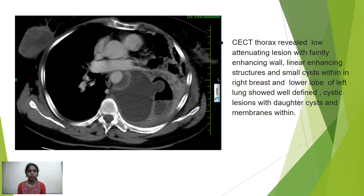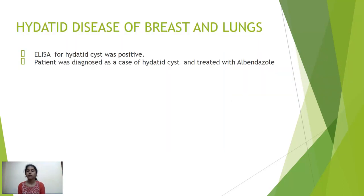CT thorax revealed a low-attenuating lesion with a faintly enhancing wall, linear enhancing structures, and small cysts within the right breast. The lower lobe of the left lung also showed a well-defined cystic lesion with daughter cysts and membranes within. This was a case of hydatid disease of breast and lungs. ELISA for hydatid cyst was positive and the patient was treated with albendazole.